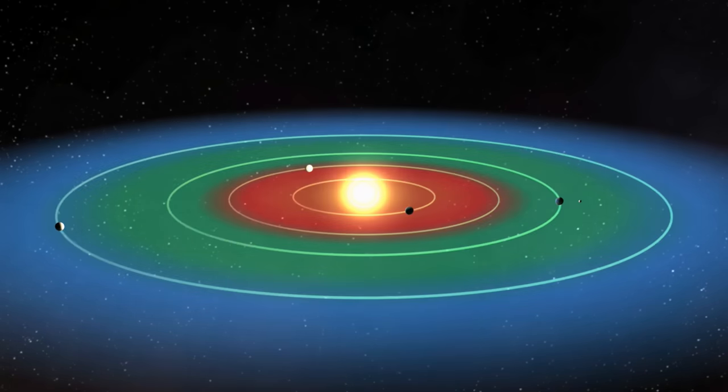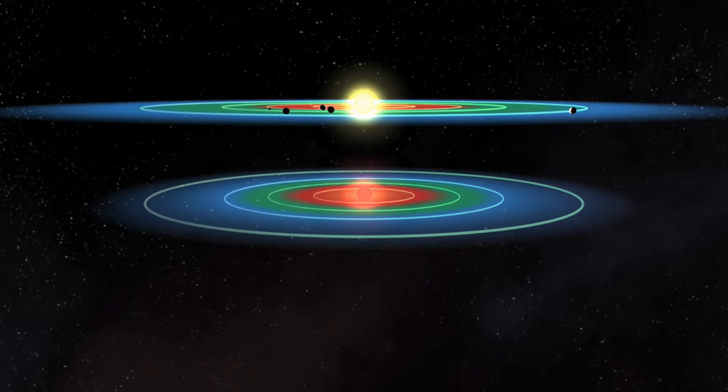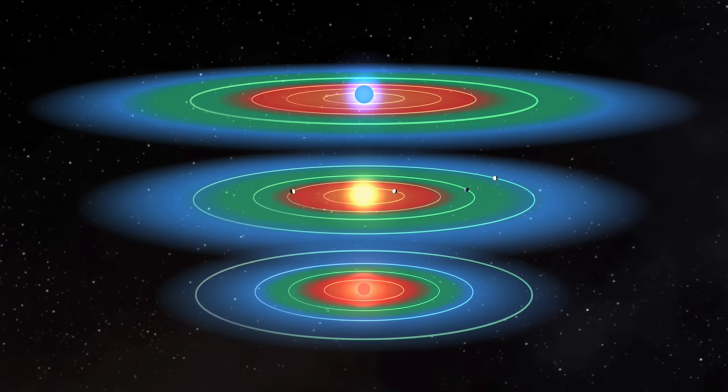At some distance from every star lies a region at just the right temperature for water to remain liquid for millions of years. Around hotter stars, this band of temperature is wider and further away. Around cooler stars, closer and tighter. In this so-called habitable zone, a planet might sustain life as we know it.